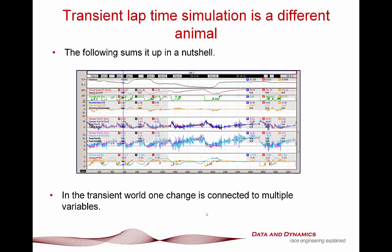Here's an example of a rear spring change I did for a V2V class car. Looking at the variance: if you take a look at the speed plot, you're not seeing an awful lot of difference. But if we look at the sector time, you can see it's getting a little bit better here, we lose a bit of time here, but we're gaining it here and here — and then we lose it there.